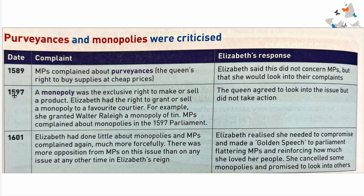Moving on about ten years to 1597 — a monopoly was the exclusive right to make or sell a product. Elizabeth had the right to grant or sell a monopoly to a favourite courtier. For example, she granted Walter a monopoly of tin. MPs complained about monopolies in Parliament in 1597. She could choose someone in her court and give them exclusive rights to sell tin, allowing them to raise the price. The Queen agreed to look into the issue but did not take action.